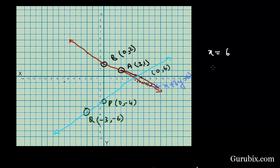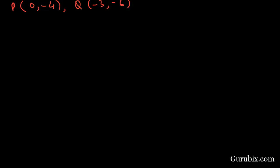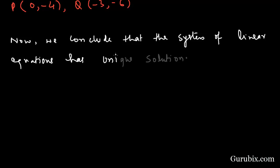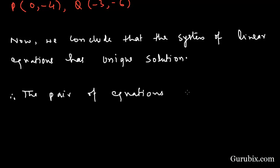The system of linear equations has a unique solution: x = 6 and y = 0. Therefore, we conclude that the pair of equations is consistent. This is the solution of the example.